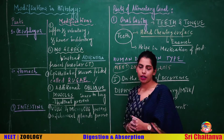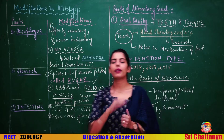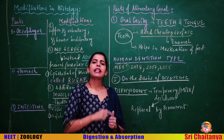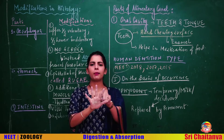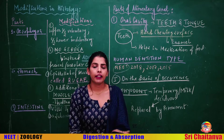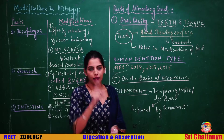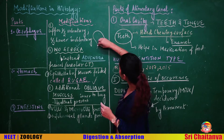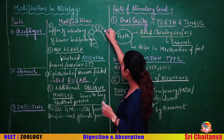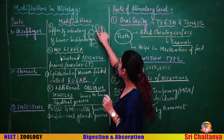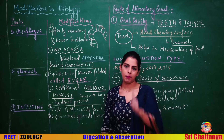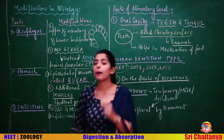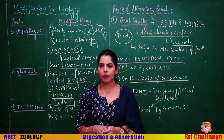Now let's look at modifications in the intestine. We are familiar with villi and microvilli. Villi are finger-like projections of the epithelial layer that increase the surface area for absorption. Microvilli are modifications of the plasma membrane of the epithelial cells. Both serve to increase the surface area for absorption. The intestine may also have some submucosal glands.